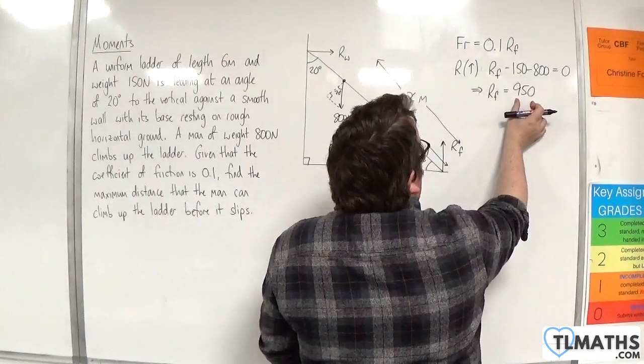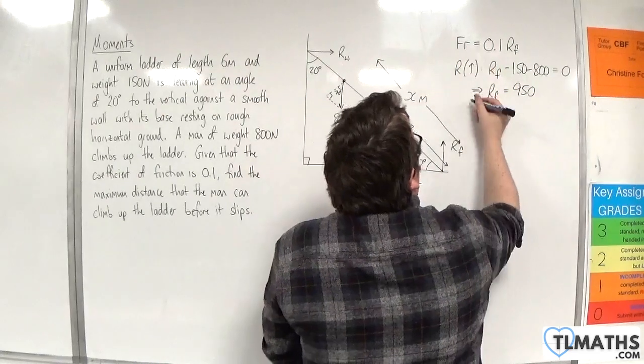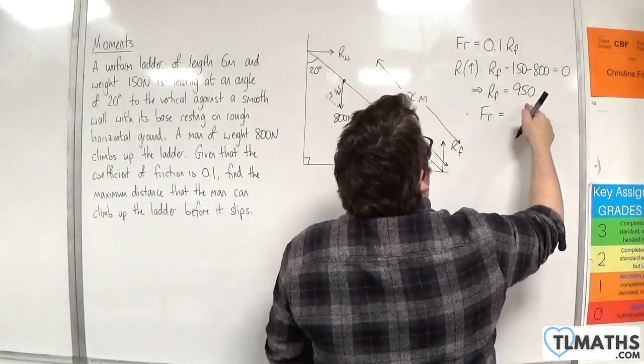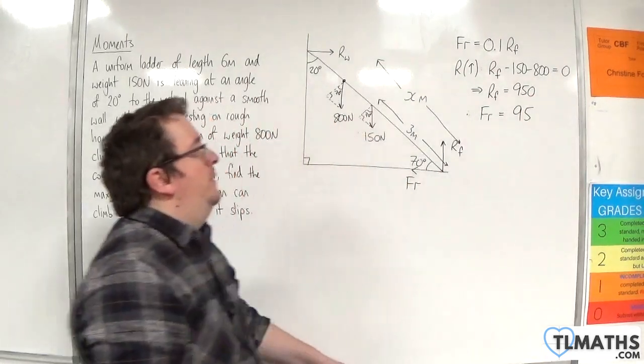Now, given that I know 950 is Rf, I can work out the friction. So therefore the friction must be equal to 0.1 times 950, so 95 newtons.